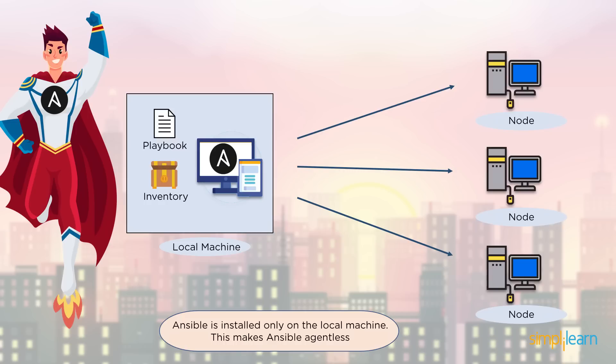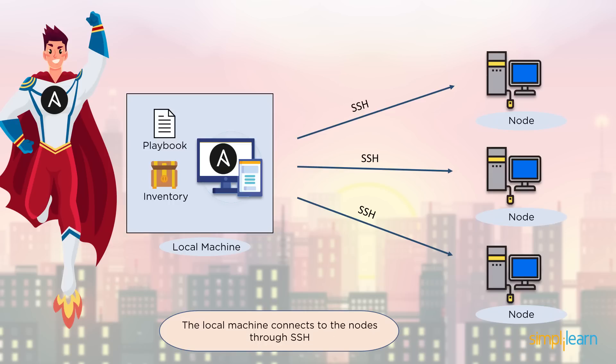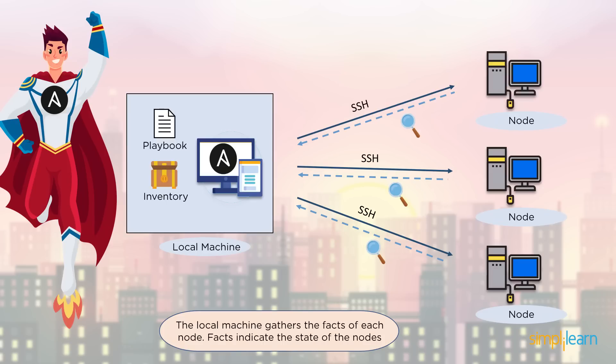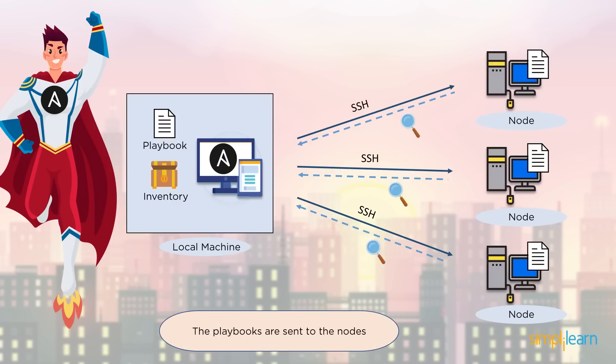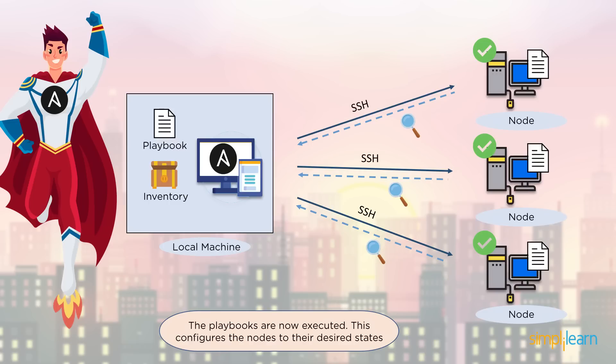Another term that you would come across with Ansible is push configuration. Since the local machine has complete control, it pushes the playbooks onto the nodes, and thus it's called a push configuration tool. The playbooks and the inventory are written at the local machine and the local machine connects with the nodes through the SSH client. This step is optional but always recommended — it's where the facts are collected. Facts are basically the current state of the node. When the playbook is executed, the task mentioned in the playbook is compared against the current status of the node, and only the changes that are required to be made are made. Once the playbooks are executed, your nodes are configured to the desired states.